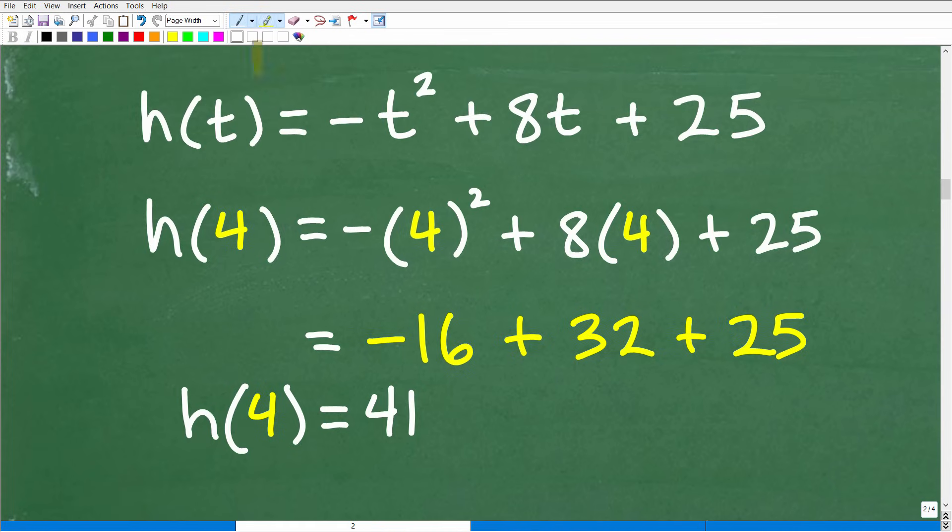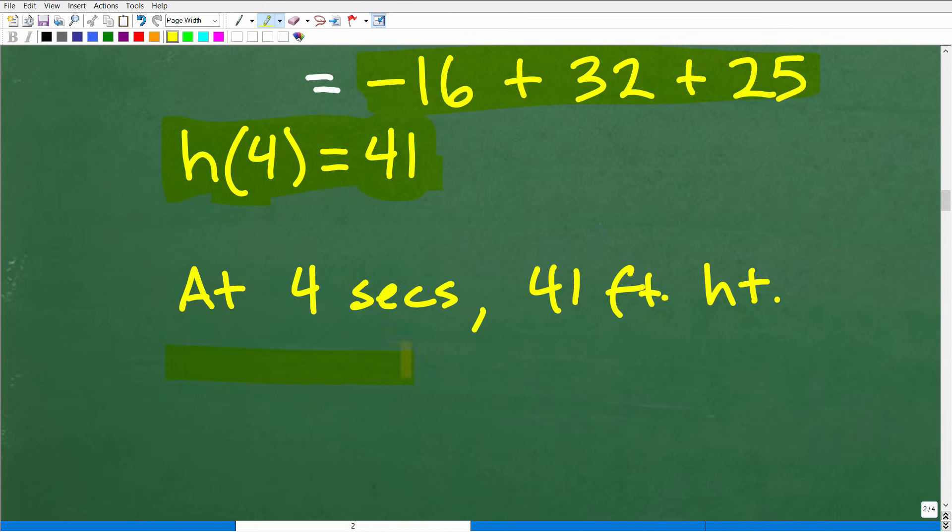Let's go ahead and do that right now. So we just plug in 4 into the function. This is how many seconds into flight where this ball will reach its maximum. When we plug in and do all the number crunching for this function, we have h of 4 is equal to 41, meaning that at four seconds the ball is 41 feet high, i.e. it reached its maximum.